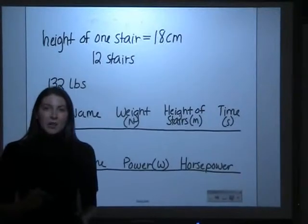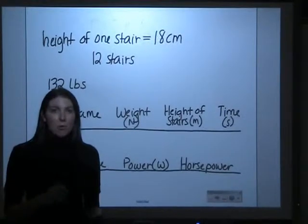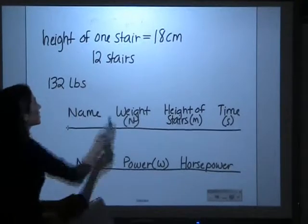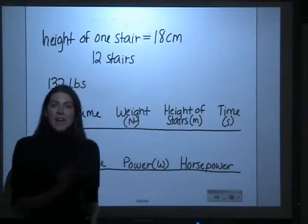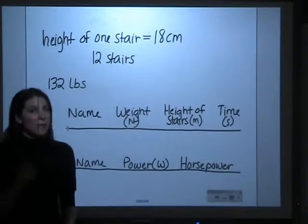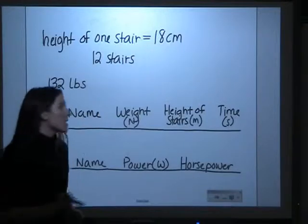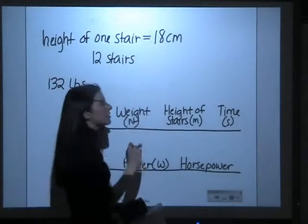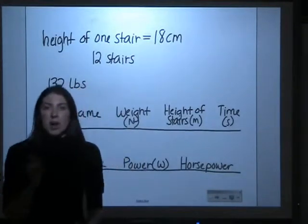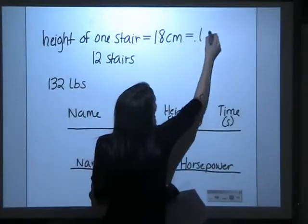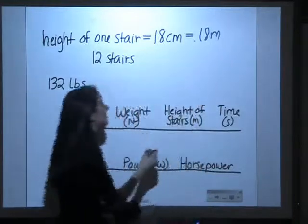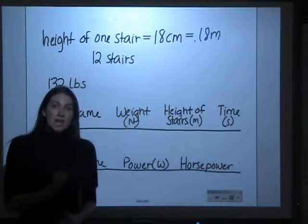So the next thing we need to do are our calculations to figure out how powerful Lizzie was. So the first thing we calculated was the height of one stair. We calculated that to be 18 centimeters, but remember, we always have to convert those into meters. So if there's 18 centimeters, remember there's 100 centimeters in one meter, so that would equal 0.18 meters.